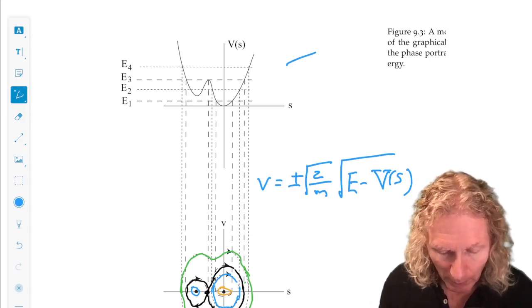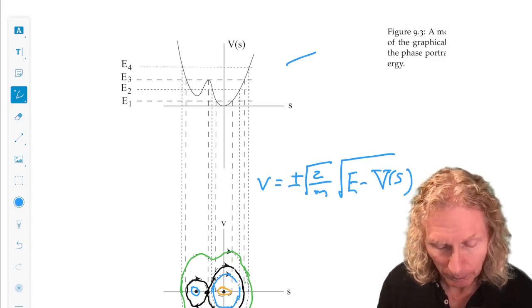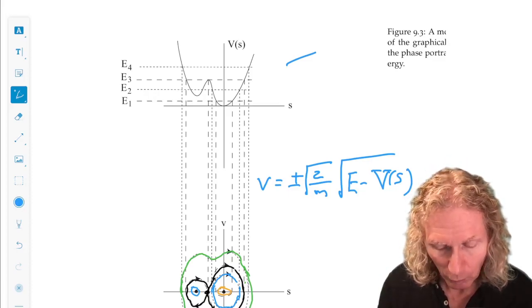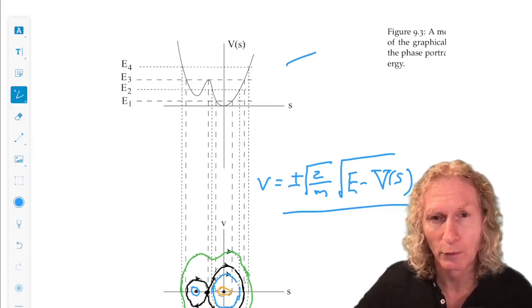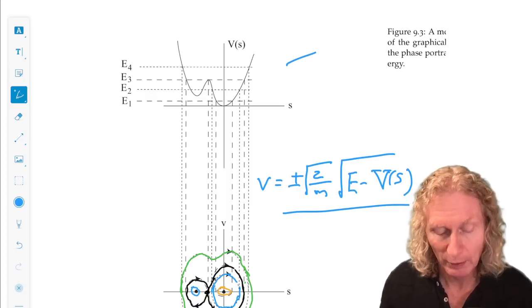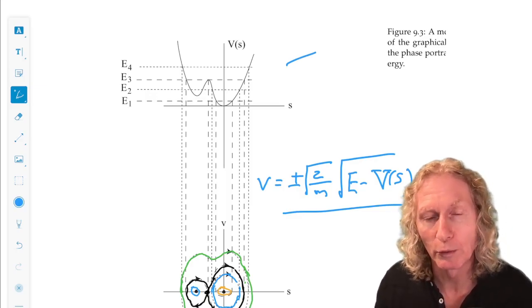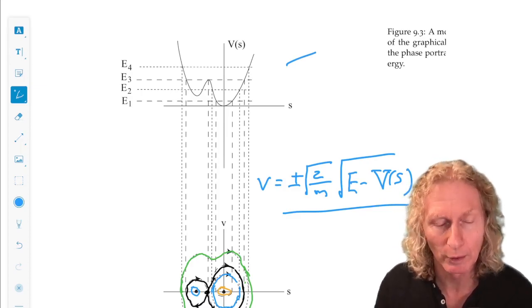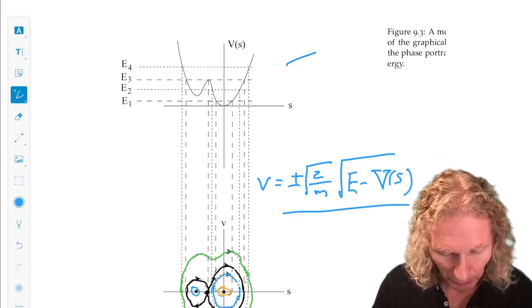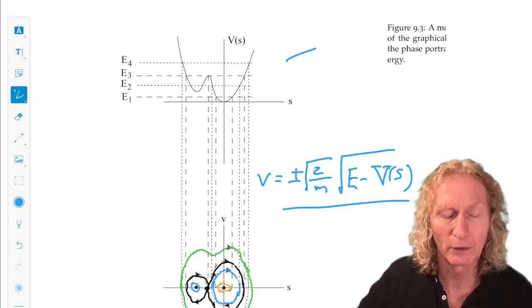And remember that I could solve for velocity for the energy function in this form. V is plus or minus square root of 2 over m square root of E minus V of s. It has two branches that become equal when E equals V of s, meaning V equals zero. And those two branches are symmetric about the s-axis.